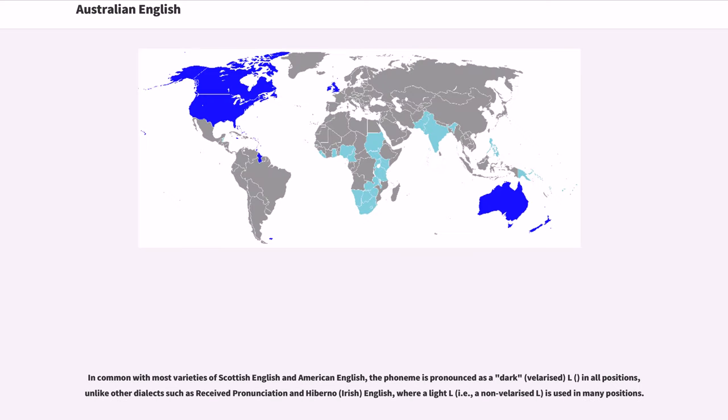In common with most varieties of Scottish English and American English, the phoneme /l/ is pronounced as a dark, velarized L, in all positions, unlike other dialects such as Received Pronunciation and Hiberno-Irish English, where a light L, that is, a non-velarized L, is used in many positions.